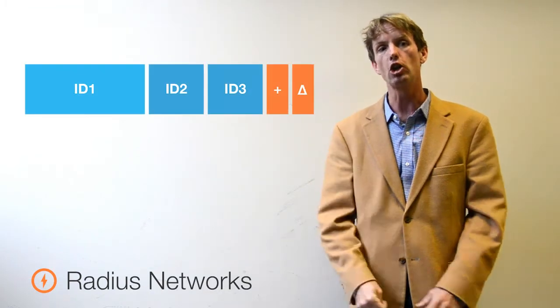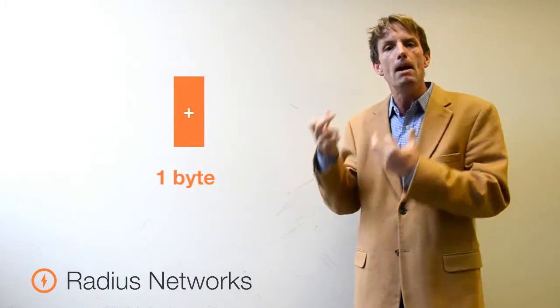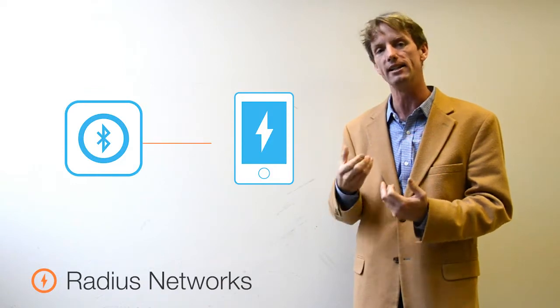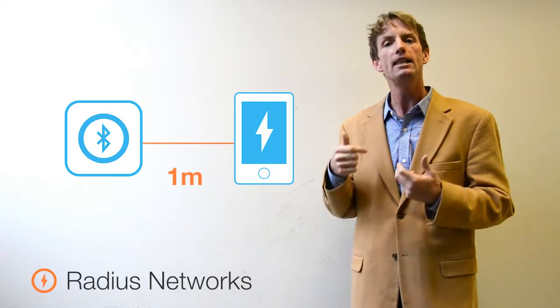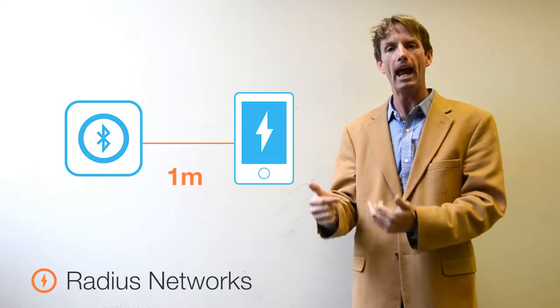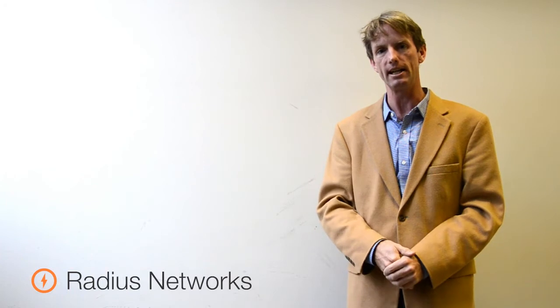The fourth field is called the power calibration value. This is the measured expected signal strength that the beacon will have on a receiving phone at a distance of one meter away. This is used to estimate the distance between your mobile device and the beacon. You can get a rough idea of how far you are away using this technology.